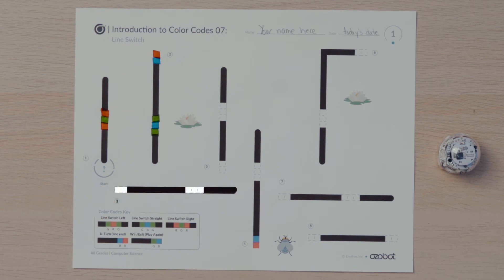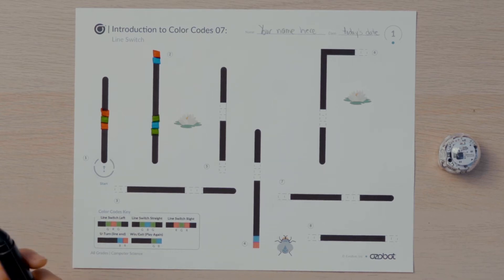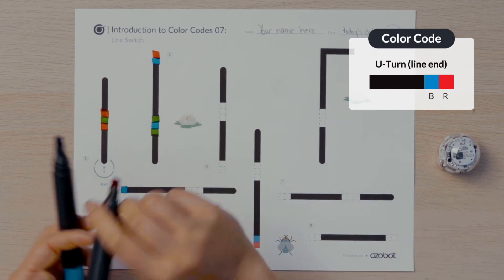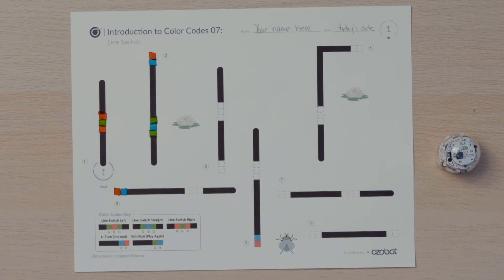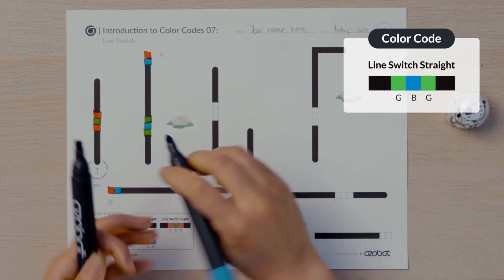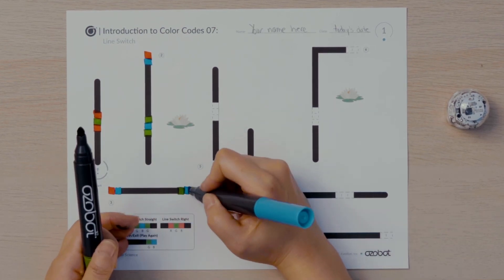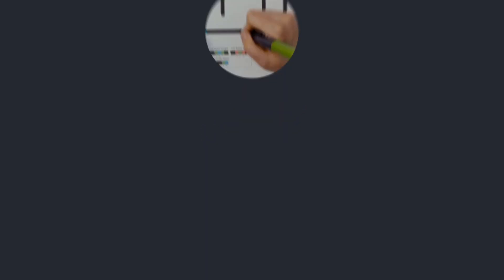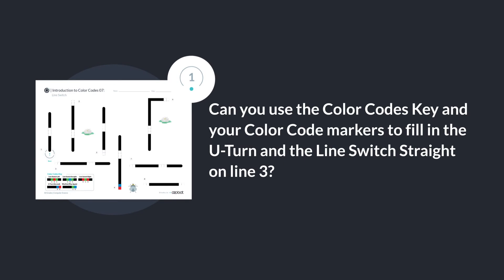When Ozobot moves to line three, it will randomly choose to turn left or turn right and follow the line. To make sure Ozobot travels the correct direction towards line four, a U-turn color code is needed. I will put the color sequence blue, red into the empty boxes on the line end. Remember to follow the line to make the first square Ozobot will come to blue and the second square red. Once Ozobot begins to travel along line three, it will need to move straight again to continue to line four. I will put the color sequence green, blue, green into the second set of empty boxes to program Ozobot to go straight and continue moving until it senses line four. Can you use the color codes key and your color code markers to fill in the U-turn and the line switch straight on line three?